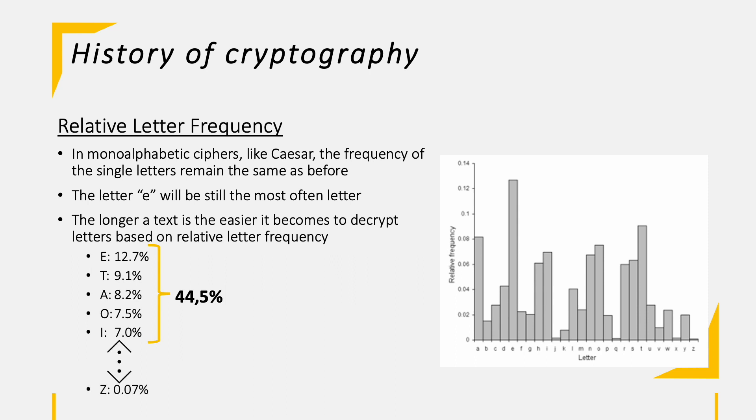In contrast to that, a Z occurs only 0.07%. In other words, a Z occurs approximately once in 1500 letters.